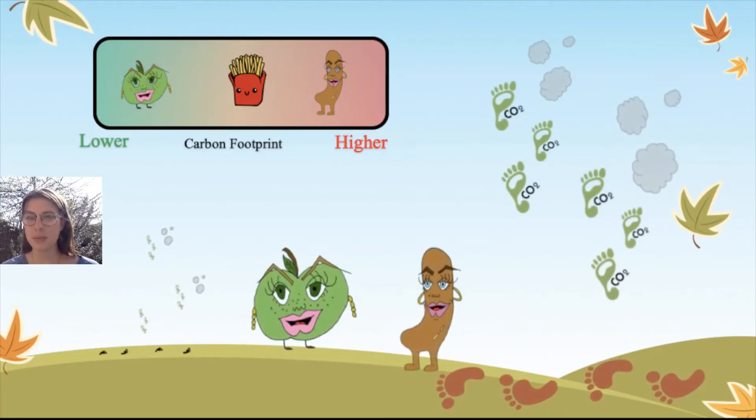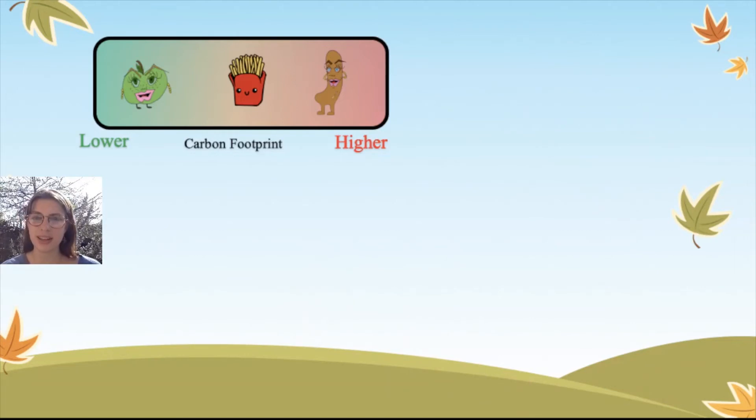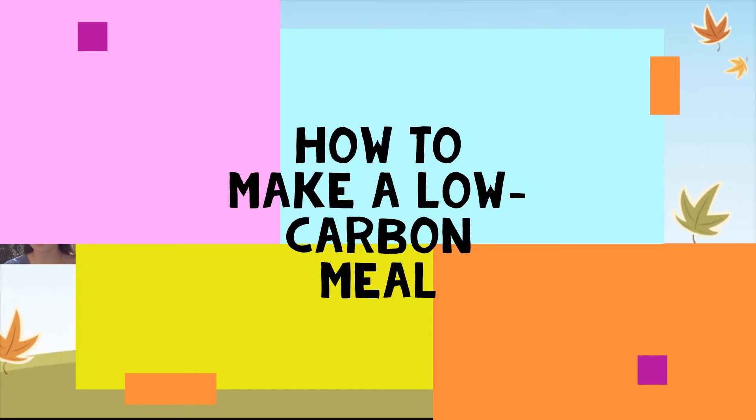Everything you can do to remove a step along the process is better, so eating local produce is often a good way to reduce your footprint. Now, when you make a meal, you add together all the different foods to have a carbon footprint for that meal. So, how can we make a low carbon meal?